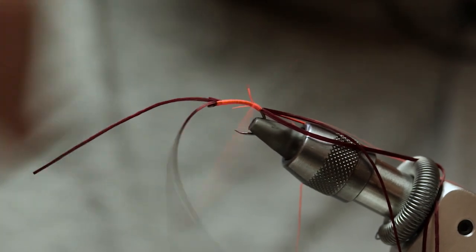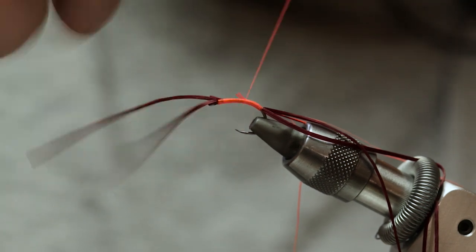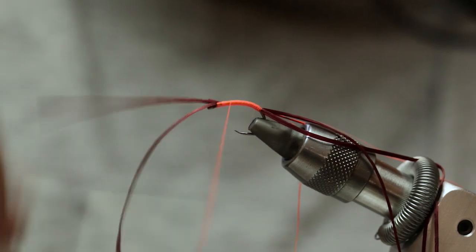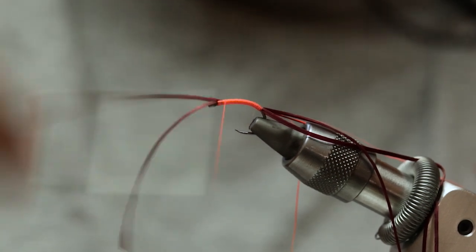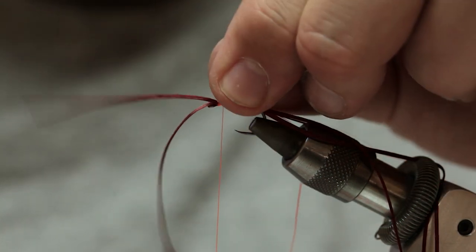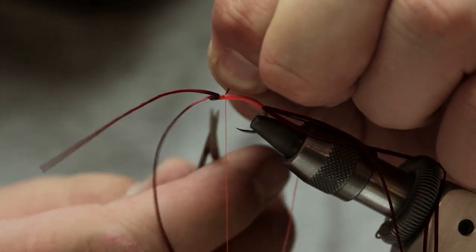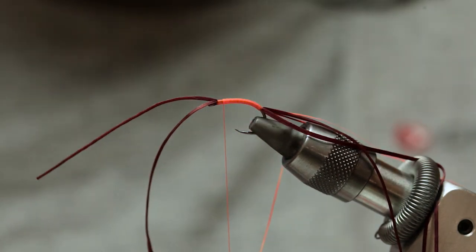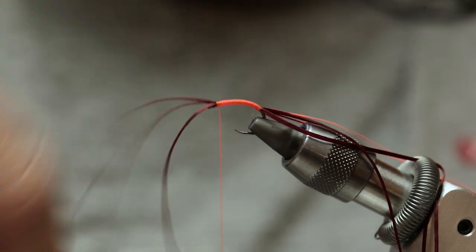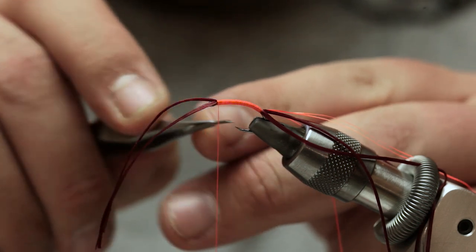And then tie that down all the way up to behind the front legs. And then this little tag end you've got left over from where you caught in the rib, cut that off.